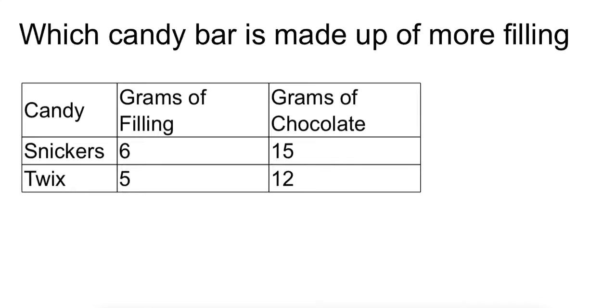Now in this next example, we're going to see which of these two candy bars is made up of more filling. Now here we have the Snickers bar, which is made of 6 grams of filling and 15 parts of chocolate. And Twix is made up of 5 grams of filling and 12 parts chocolate. Now I can see right here it's probably going to be easier for me to find a common multiple between the grams of filling, so that's what I'm going to do first.